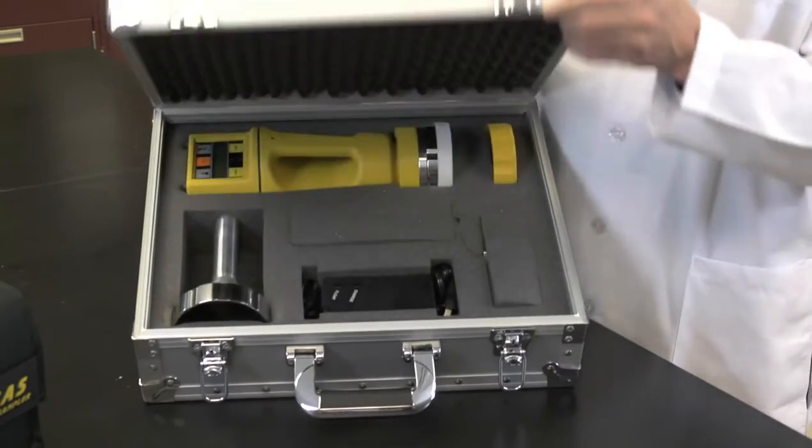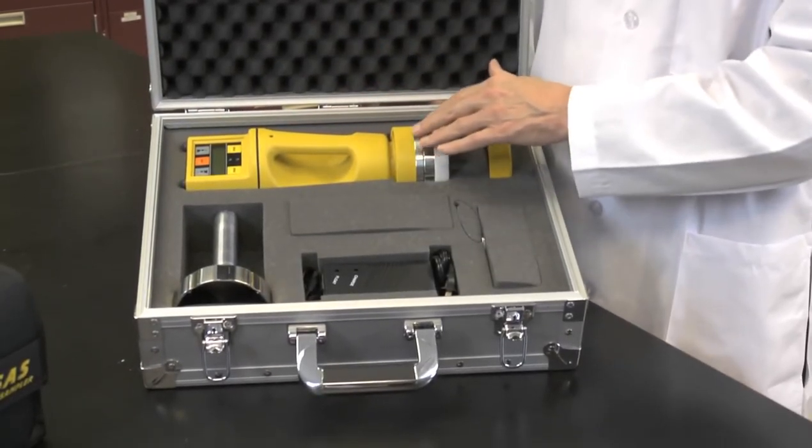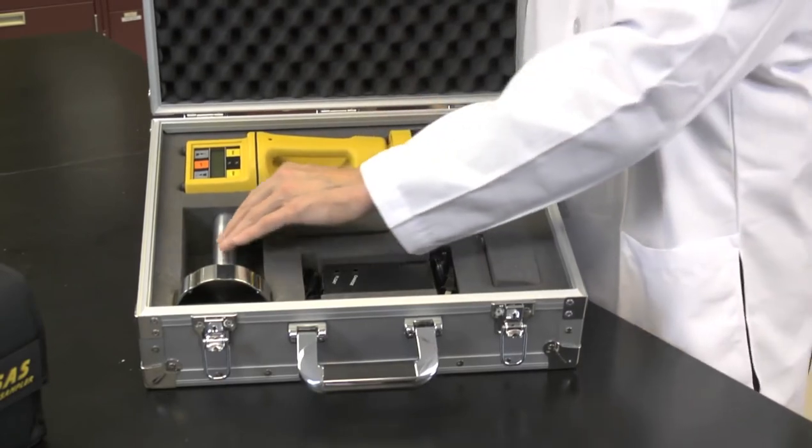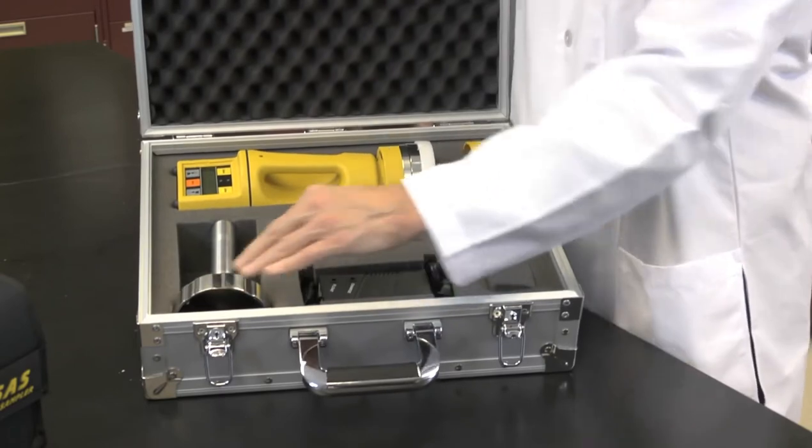This is our aluminum carrying case. See how nicely protected the unit is. In addition, if you're doing compressed gas testing you have the compressed gas test head which fits perfectly in this custom cut die cut.